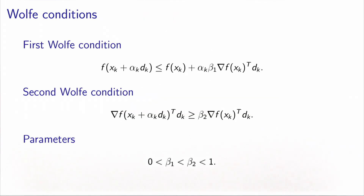Let's first recall the two Wolfe conditions. The first one guarantees a sufficient decrease in the objective function as compared to the length of the step — it is designed to reject steps that are too long. The second Wolfe condition guarantees a sufficient progress of the algorithm and rejects steps that are too short. These two conditions are parameterized with two parameters β1 and β2, and they are compatible if β1 is strictly less than β2, both parameters being strictly between 0 and 1.